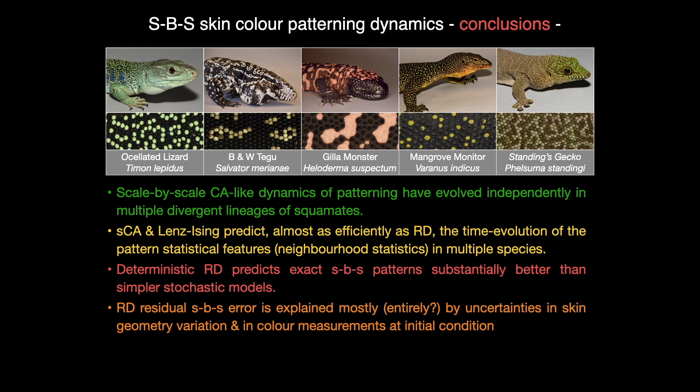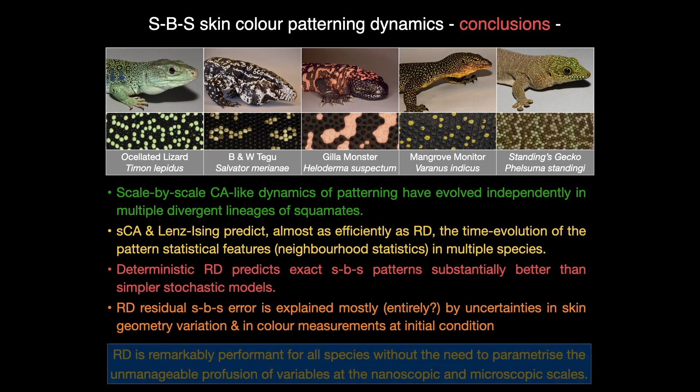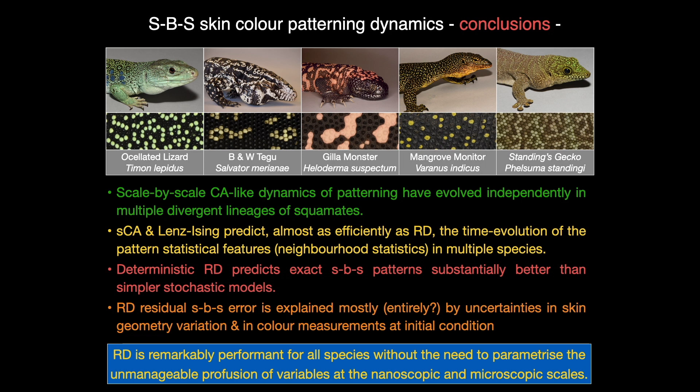Fourth, the residual scale-by-scale error is explained mostly, if not entirely, by uncertainties in skin geometry variation and in color measurements in juveniles. Our study indicates that reaction diffusion is remarkably performant for predicting actual patterns without the need to parameterize the unmanageable profusion of variables at lower scales.